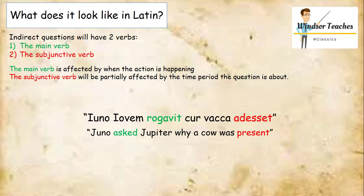Also, it's worth saying at this point, this story brings up a lot of problematic content, especially to the modern observer, regarding themes like consent and assault as well. So here we've got the main verb rogavit in the green, and the subjunctive verb adesset, which refers to the vacca, the cow. So this is a reported question, and not a direct question, because the question is implied. The direct question is implied, not said outright, and it is referred to.